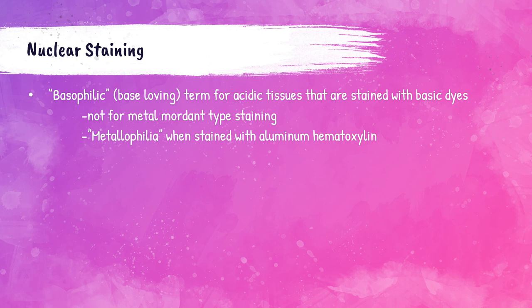Many of the same types of tissues are stained with the metal mordant mechanism, but sometimes substances without acidic groups are stained — for example, mucopolysaccharides without a charge, and also myelin. For these instances the term metallophilia or metallophilic is used, which is appropriate for tissues that induce staining with metal mordant complexes.